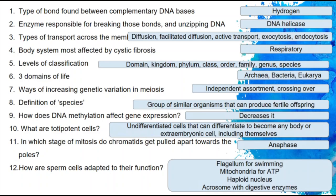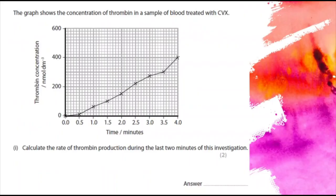Another question worth attempting is a bit of maths. The graph shows the concentration of thrombin in a sample of blood treated with CVX — we're just going to focus on the maths. Calculate the rate of thrombin production during the last two minutes of the investigation. Have a go at this question.